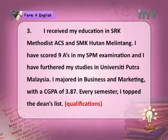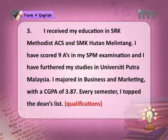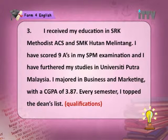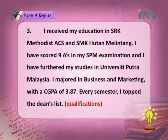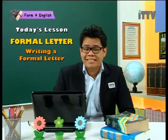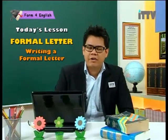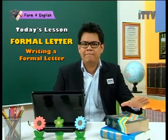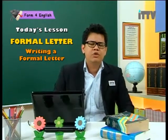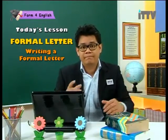In the third paragraph, show your qualifications. For example: 'I received my education in SRK Methodist ACS and SMK Hutan Melintang. I scored nine A's in my SPM examination and furthered my studies at University Putra Malaysia. I majored in Business and Marketing with a CGPA of 3.87. Every semester, I topped the Dean's list.' A CGPA of 3.87 out of 4.0 is very good — this tells the employer the applicant is an excellent student.